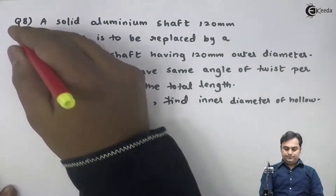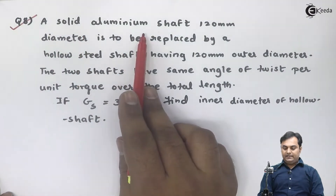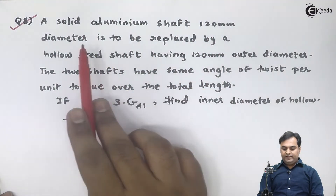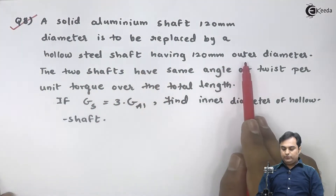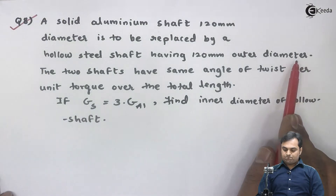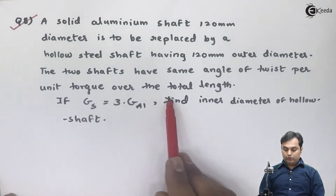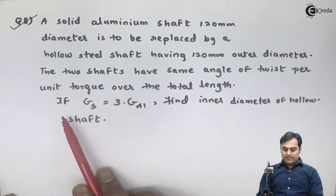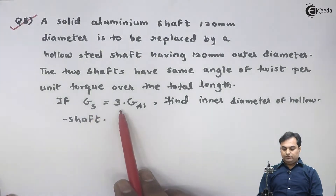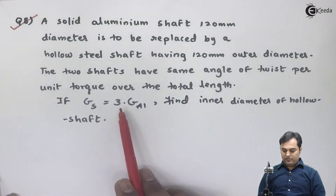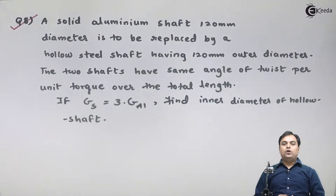Let us take the next question. A solid aluminium shaft of 120 mm diameter is to be replaced by a hollow steel shaft having 120 mm outer diameter. The two shafts have the same angle of twist per unit torque over the total length. If G_s, the modulus of rigidity for steel, is equal to three times the modulus of rigidity for aluminium, find the inner diameter of the hollow shaft.